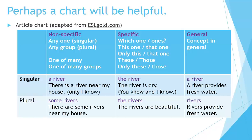Let's look at some examples. Singular: a river — there's a river near my house, only I know which one. The river — the river is dry, now you know and I know which one I'm referring to. A river — a river provides fresh water, talking about rivers in general. Plural: some rivers — there are some rivers near my house. The rivers — the rivers are beautiful, the ones near my house. Rivers — rivers provide fresh water, no article, talking about rivers in general.